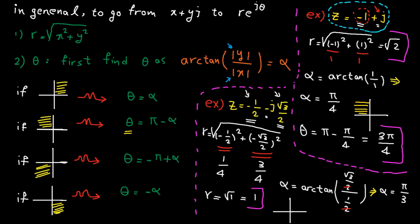The real and imaginary parts of z are both negative, so the number is in the third quadrant. Therefore, the angle is minus pi plus alpha, which is minus 2 pi divided by 3.